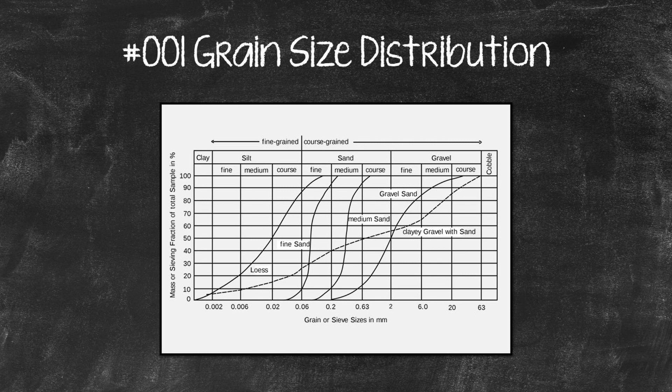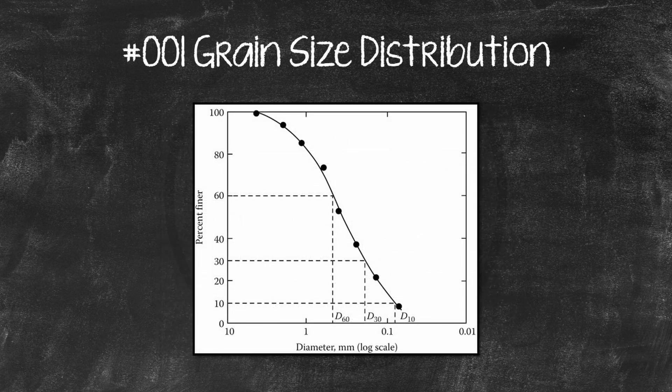The uniformity coefficient and coefficient of curvature depend on the shape of the curves. These parameters are used in the Unified Soil Classification System to classify granular soils. The grain size distribution can be characterized by the quantities d60, d30, and d10. These indicate that 60%, 30%, and 10% of the particles expressed as weight is smaller than that diameter.